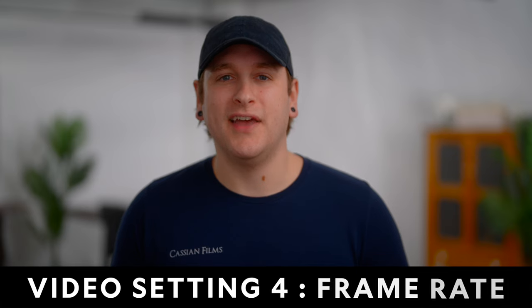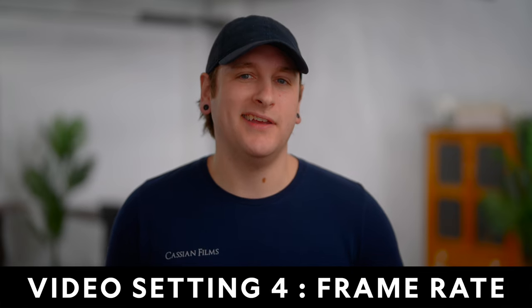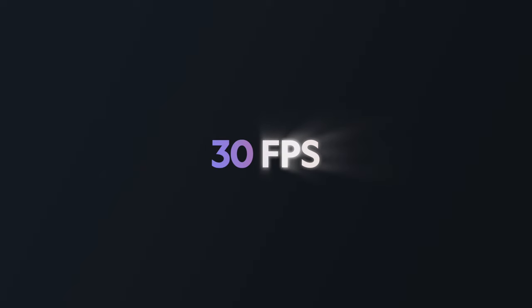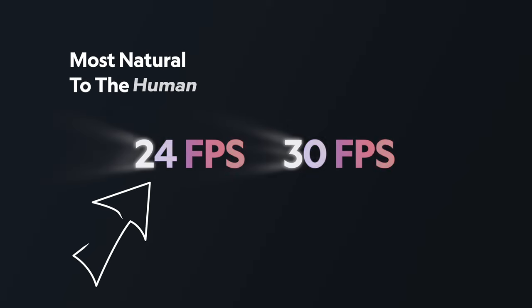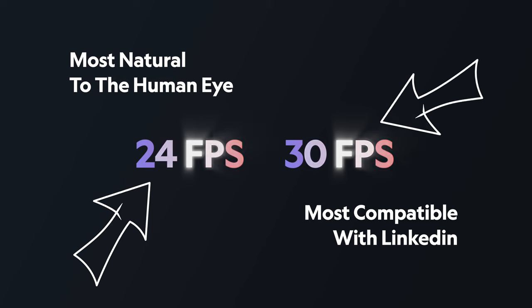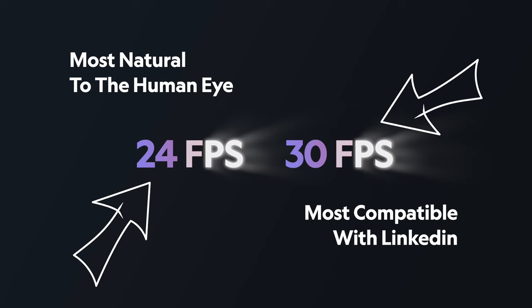The last video setting to consider is frame rate. We recommend using a frame rate of 30 frames per second for LinkedIn videos. While 24 frames per second is the most natural, 30 frames per second works the best on LinkedIn. This frame rate will help your videos look smooth and professional and ensure that your audience can watch your videos without any glitches or interruptions.